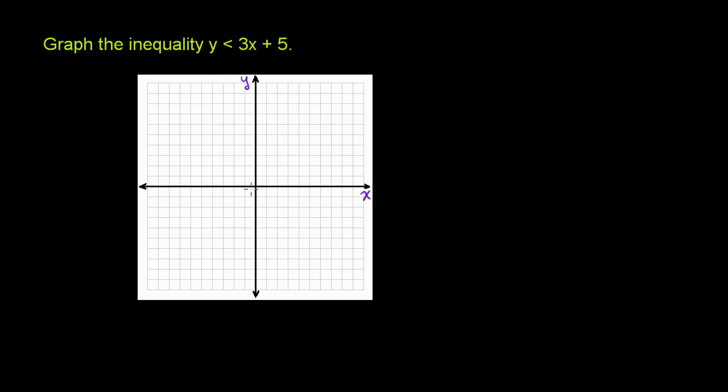So this is saying, you give me an x. So let's say we take x is equal to 1 right there. 3 times 1 plus 5, so 3 times x plus 5. So 3 times 1 is 3, plus 5 is 8. So 1, 2, 3, 4, 5, 6, 7, 8.